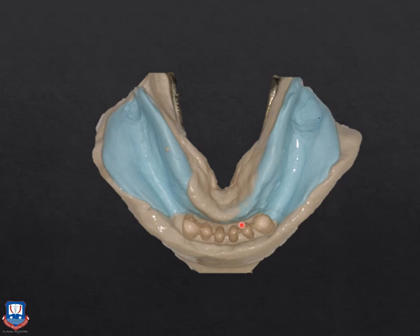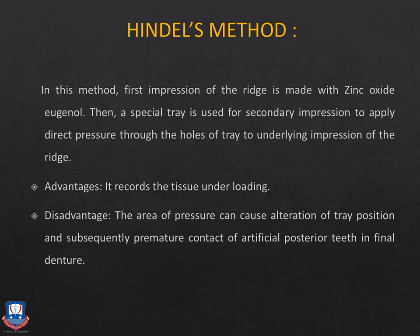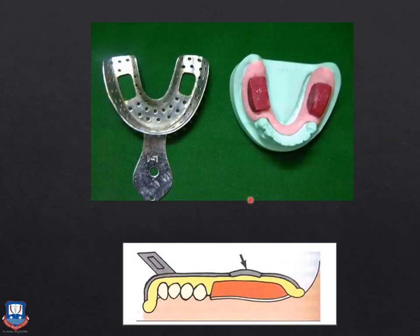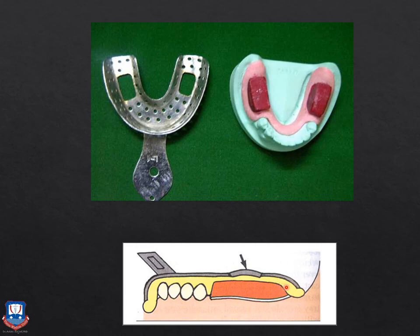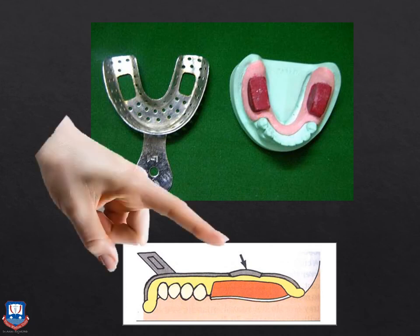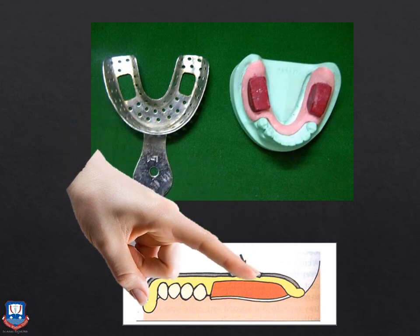In McLean's technique, the distal extension bases are recorded under occlusal loading, and the rest of the impression — the abutment teeth — is picked up in an anatomic state. However, the pickup impression with the stock tray using finger pressure was not always accurate. Hindle's modification addressed this by creating holes in the stock impression tray over the distal extension bases. When the alginate or agar hydrochloride was setting in the pickup impression, finger pressure was applied through these holes onto the wax rims, recording both impressions under occlusal loading. This was considered superior to McLean's original technique.